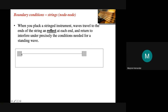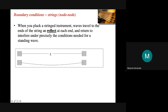When you pluck the guitar, waves travel to the ends of the string and reflect at each end, returning to interfere under precisely the conditions needed for a standing wave. You have the string fixed at both ends. When you pluck it and send a wave pulse, it hits a fixed end, reflects in the opposite direction, and goes back and forth until a standing wave is created. In this boundary condition, you have two nodes and one antinode.